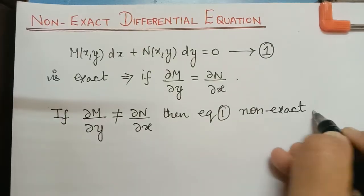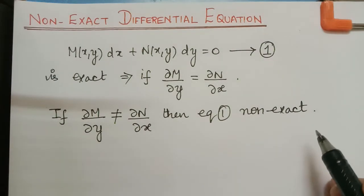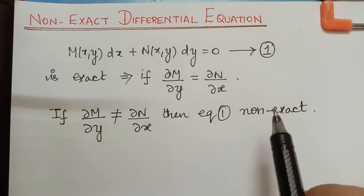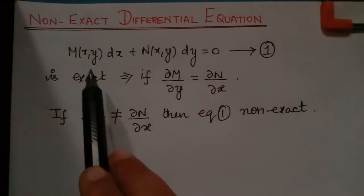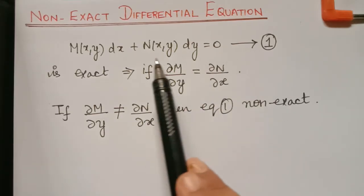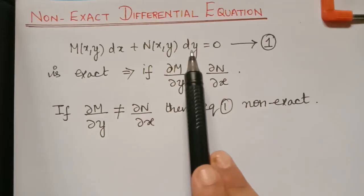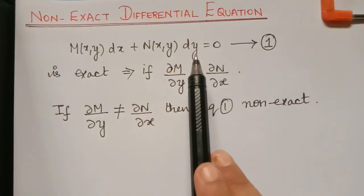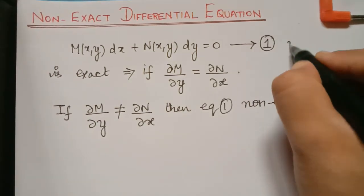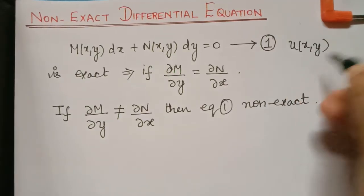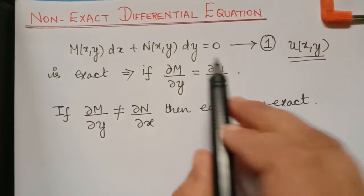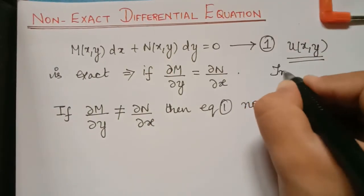So, how to solve a non-exact differential equation is what we are going to learn in this video. In simple words, because equation 1 is non-exact, first we have to convert this equation into an exact equation. To convert equation 1 to an exact equation, we multiply it by a function u(x, y). This function will convert the non-exact equation to an exact equation. Such a function is known as an integrating factor.